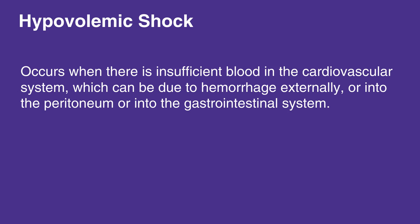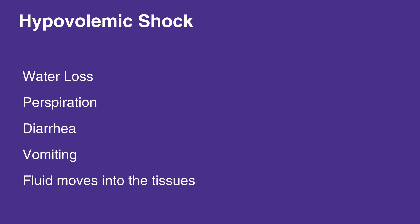It occurs when there's insufficient blood in the cardiovascular system, which can be due to hemorrhage externally or into the peritoneum or into the gastrointestinal system. Hypovolemic shock in children can also occur from water loss, perspiration, diarrhea, vomiting, or when fluid moves into the tissues.